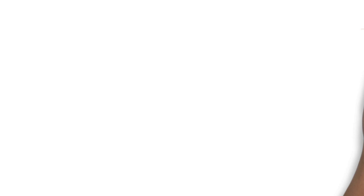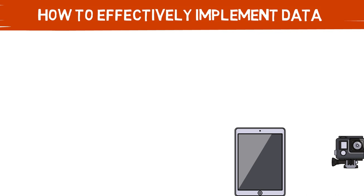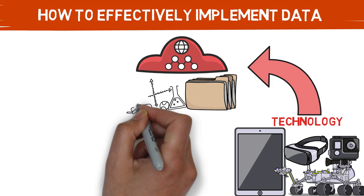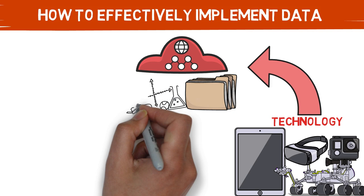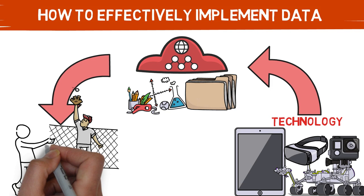That's what today's video is going to be all about. So to begin, how can you effectively implement data? The ideal process looks something like this: you begin by investing and learning about the technology out there. Once you make that investment on what seems important to you, you begin to collect that data, find different ways to understand it, and then begin to implement it. Then ideally, you find ways to blend that into your practice plan and eventually see those results turn out on the field.